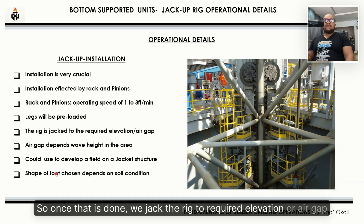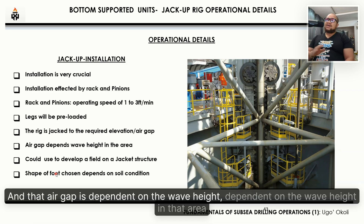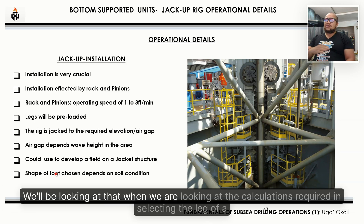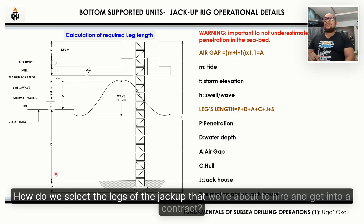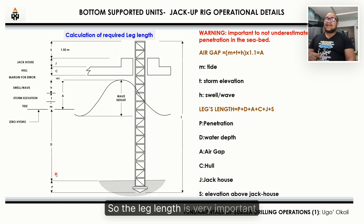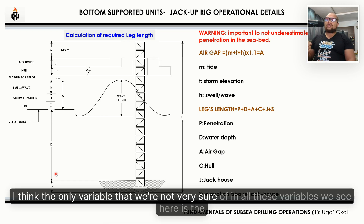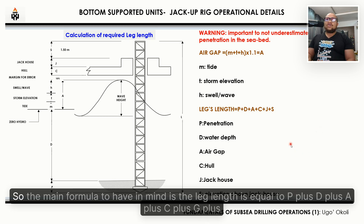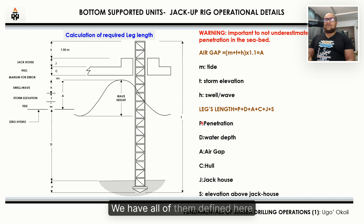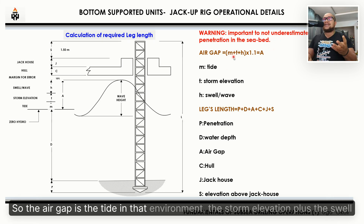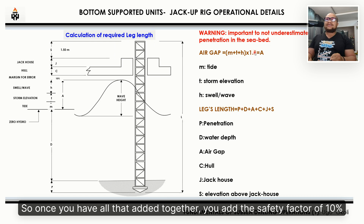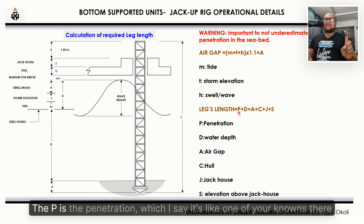Once preloading is done, the rig is jacked to the required elevation or air gap, which is dependent on the wave height in that area. The leg length formula is: Leg Length = P + D + A + C + G + S. The air gap (A) is calculated as the tide plus storm elevation plus swell, with a 10% safety factor added.